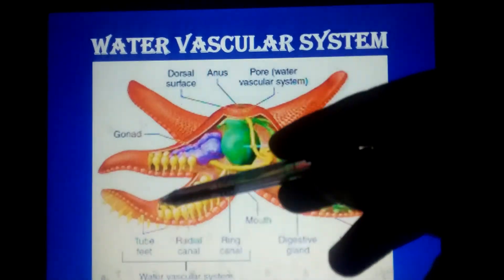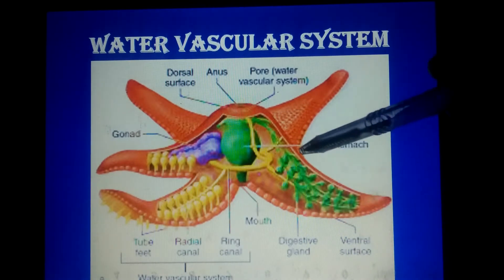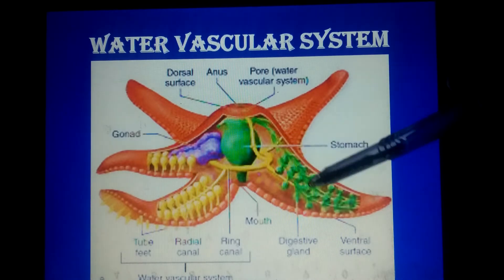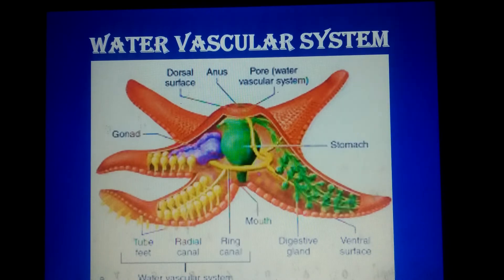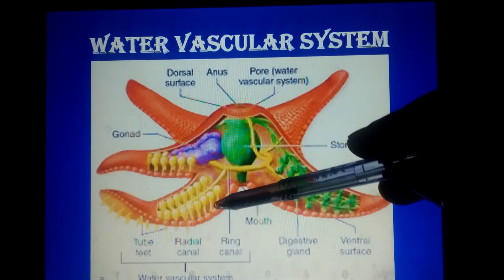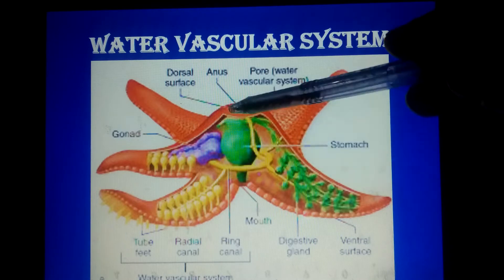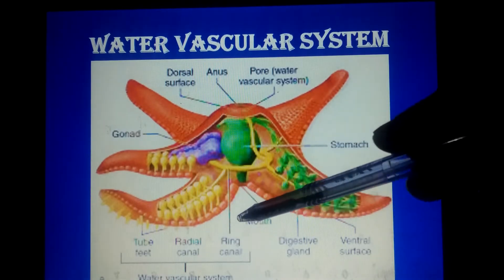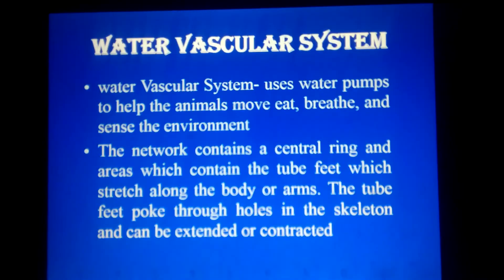The water vascular system consists of tube feet. You can see the tube feet in the starfish here. The water vascular system is like a circulatory system and also like a respiratory system. Water moves by current inside the body through these tube feet, and nutrients and gases move inside and outside of the body through these tube feet.